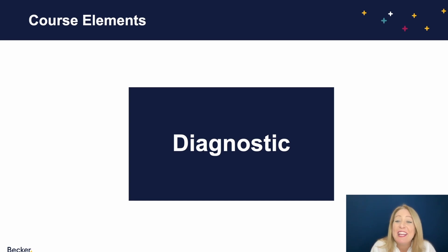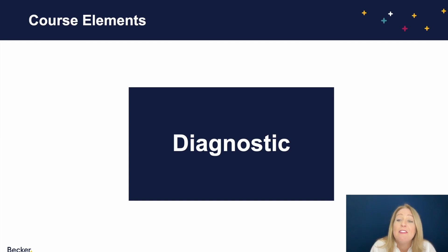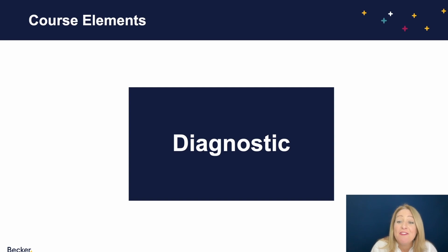Green indicates you have a solid financial accounting foundation and are ready to move on to the CPA exam review. Yellow suggests you could benefit from a review of some essential financial accounting topics before moving on to your CPA exam review. Your readiness score will give you an idea of where you should focus your time in the Financial Accounting Foundations course. Red indicates there are gaps in your knowledge of essential financial accounting topics, and you would strongly benefit from working through all modules of the Financial Accounting Foundations course.